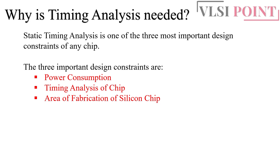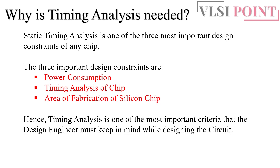If you want to reduce the area, there may be some changes in the timing, or the power will increase. So what we try to do is optimize all three things together. An ideal circuit should not have high power consumption, it should follow all the timing constraints, and its area should be as small as possible. Timing analysis is one of the most important criteria and as a design engineer you must keep it in mind while designing a circuit.